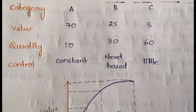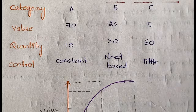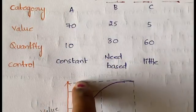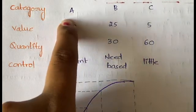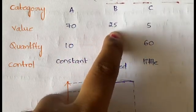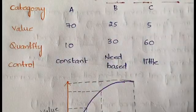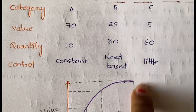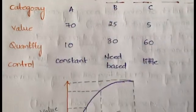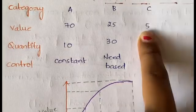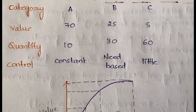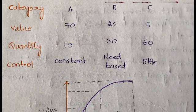In ABC analysis, more priority is given to value, not quantity. Category A requires constant, strict control because even though fewer units are needed, the material is most important. Category B, with a value of 25%, requires moderate control on a need basis. Category C, with value of only 5%, requires very little control.